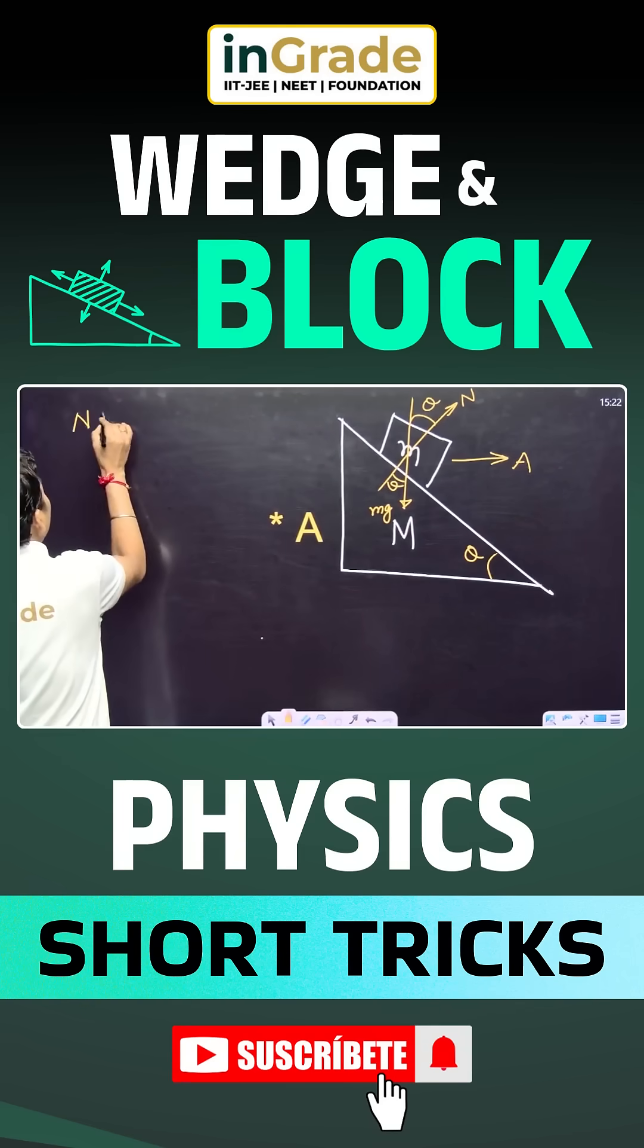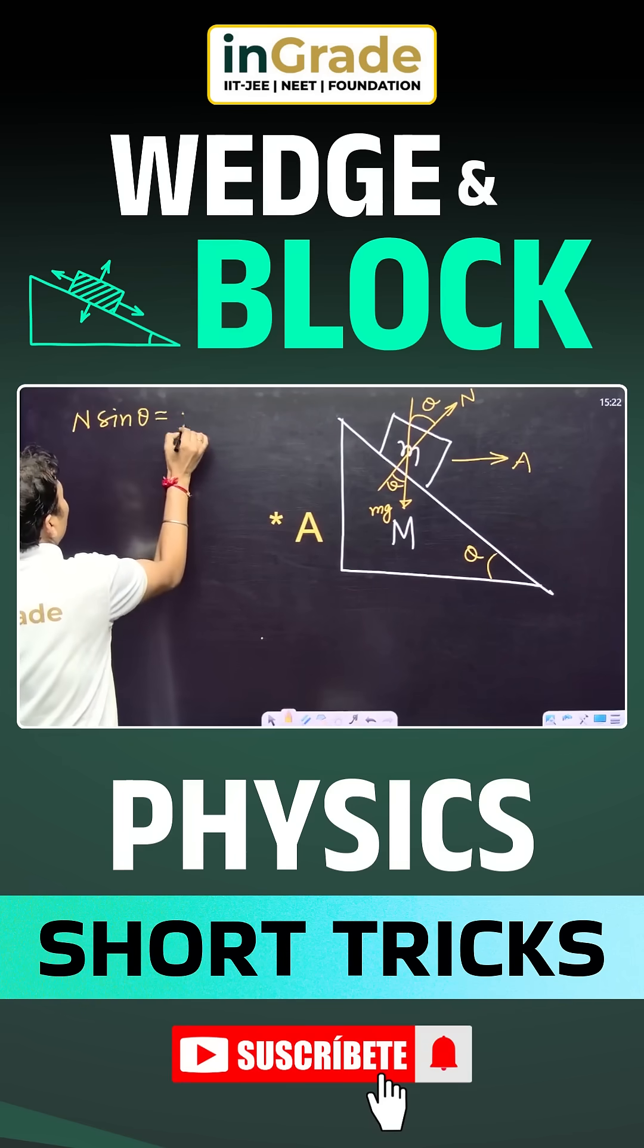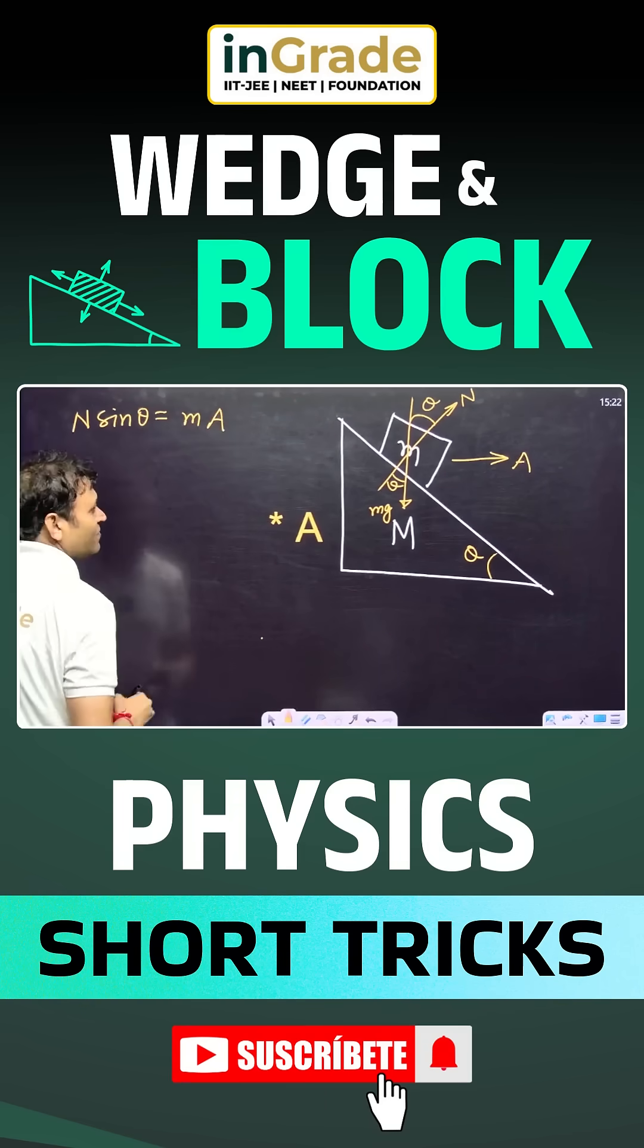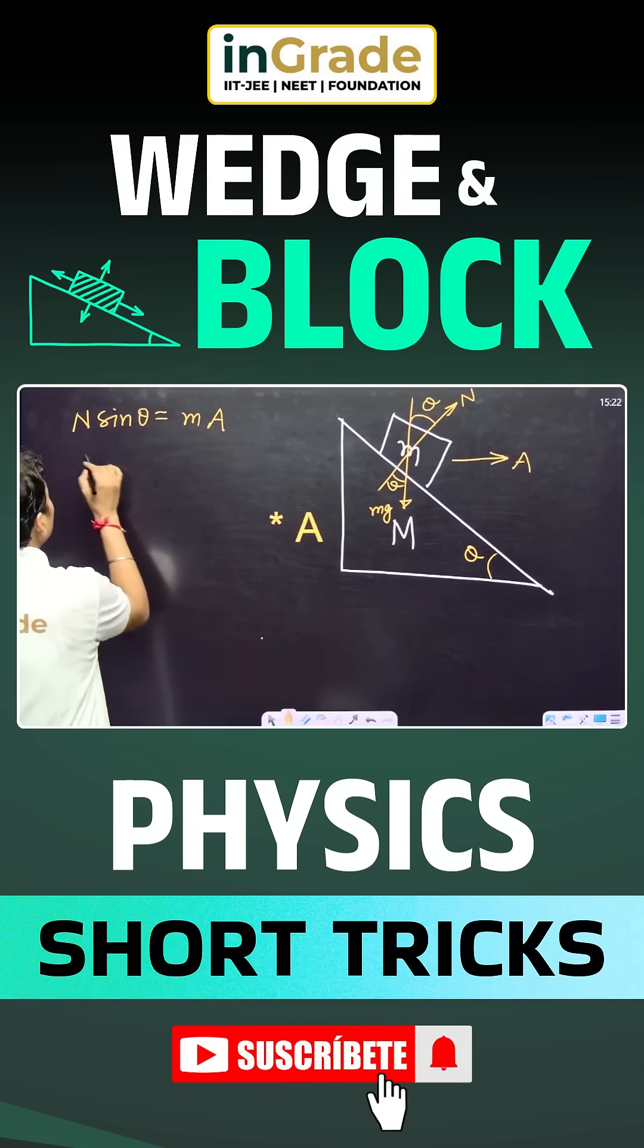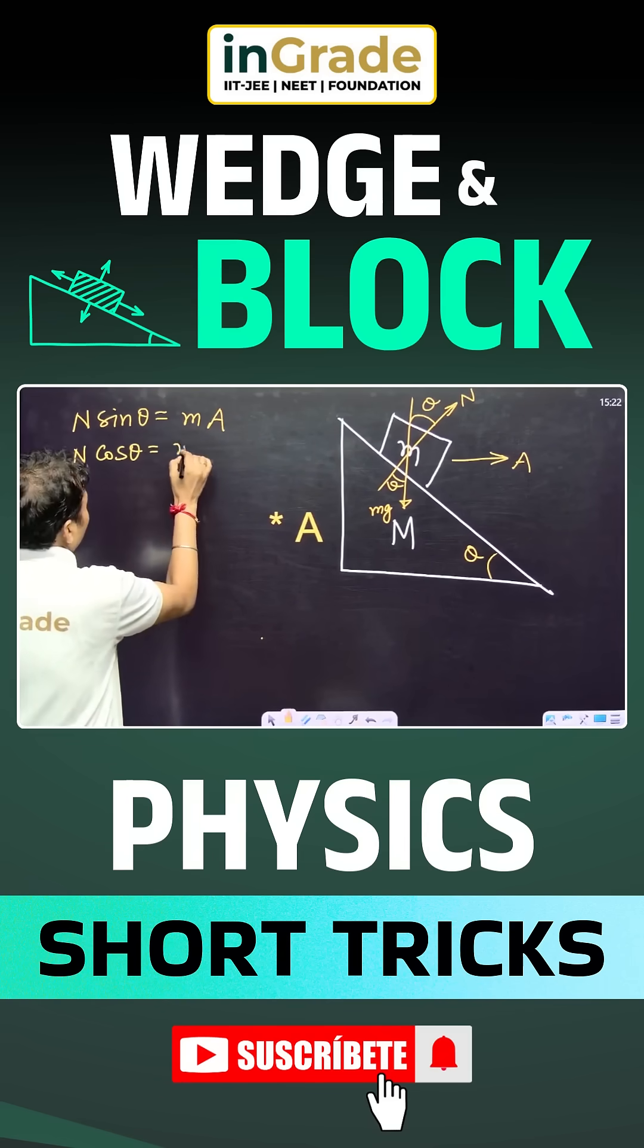we can say n sin theta should be equal to mass of the block into acceleration of the block relative to the ground, and n cos theta vertical force will be equal to mg.